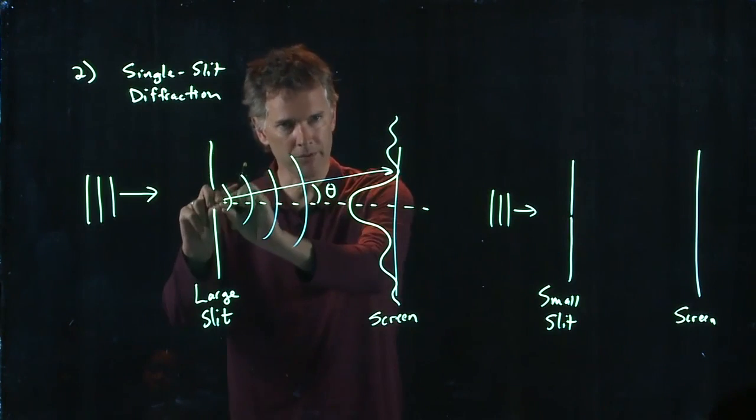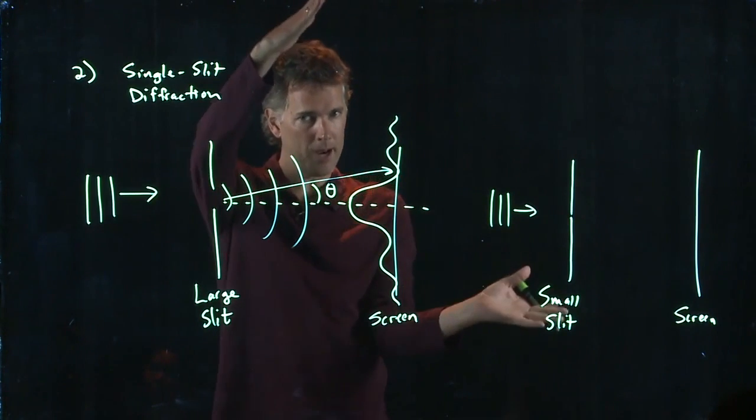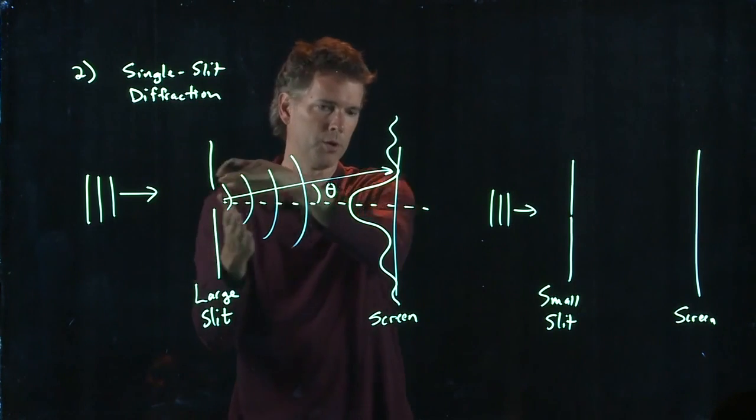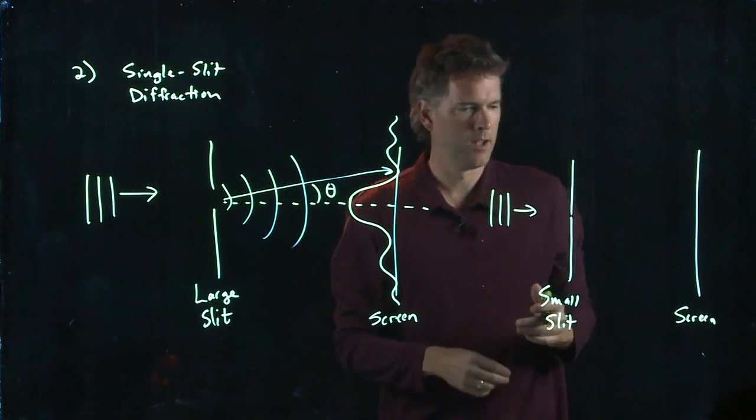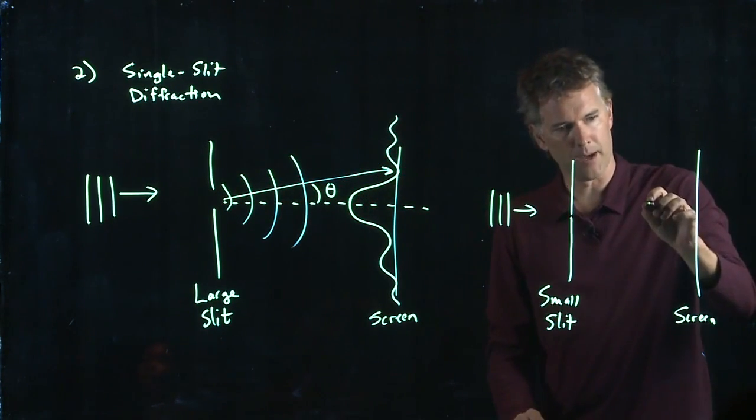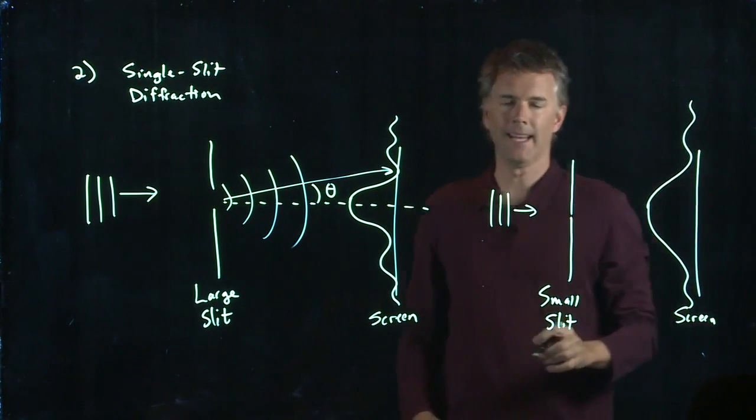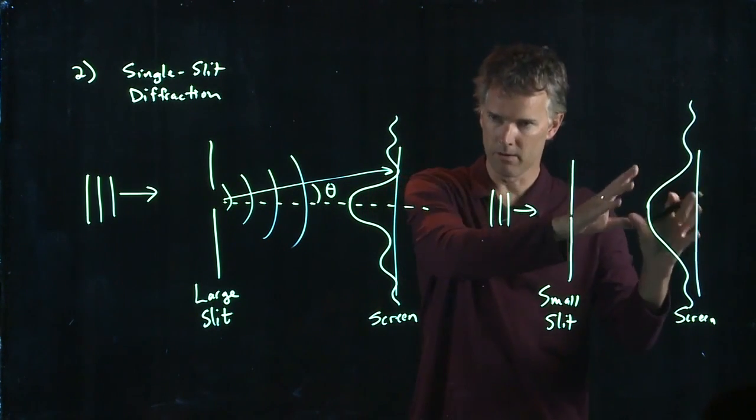Diffraction means if you go through a small hole, you're going to spread out much more. If you go through a big hole, you're going to spread out much less. And so the diffraction pattern is going to do this. It gets much wider over here.